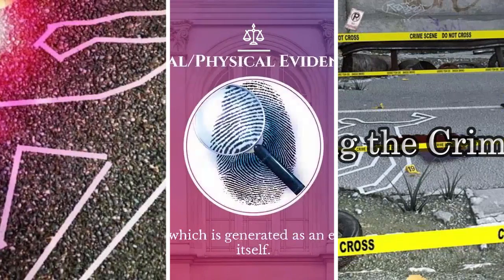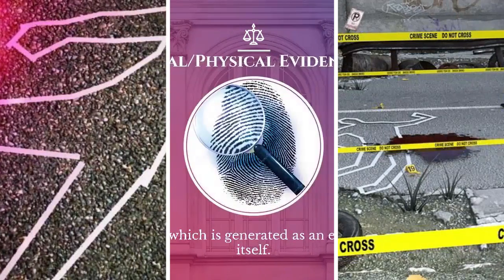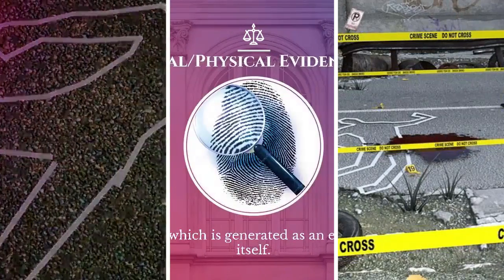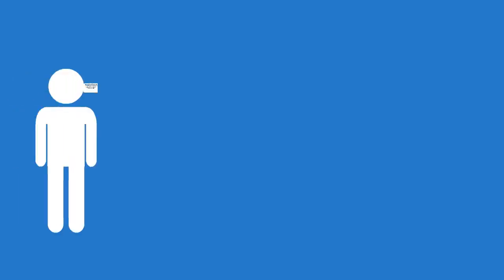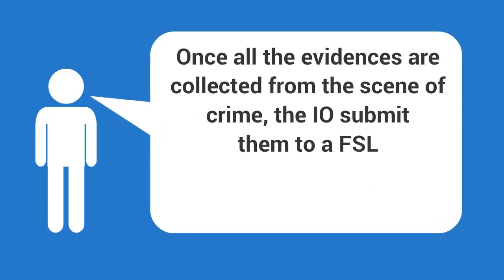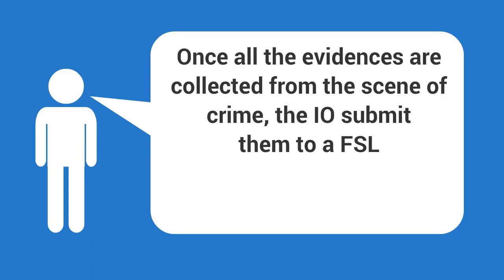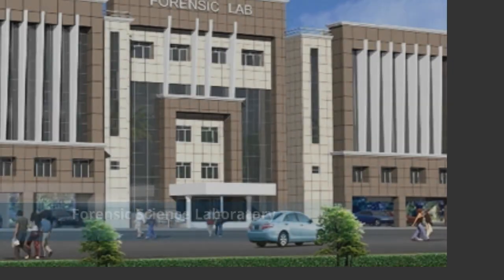Hello everyone and welcome back to uForensics. In our previous videos we have discussed types of crime scene, types of evidence and crime scene processing. But what happens after it? Once all the evidences are collected from the scene of crime, the investigating officer submits them to a forensic science laboratory for analysis.